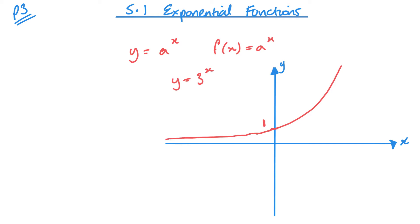It's going to cross at 1 because when x equals 0, y will equal 1. This part of the graph is going to head towards the x-axis but never reach it, and this part is just going to get steeper and steeper.